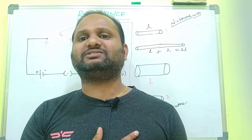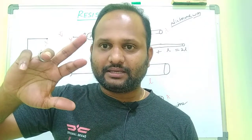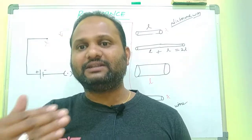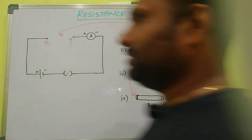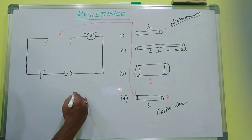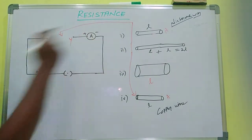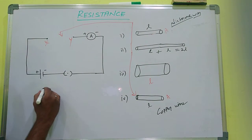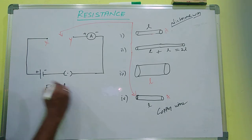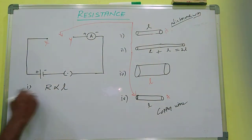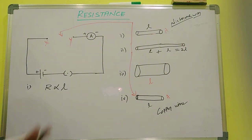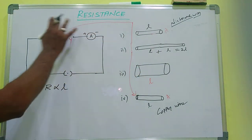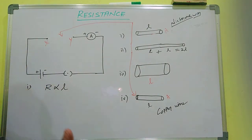When we double the length, the current decreases. That means when the length increases, the resistance of the wire increases, so the amount of current passing through the circuit decreases. From this observation, resistance is directly proportional to length. When the length is increased, resistance increases, so current decreases, because resistance and current are inversely proportional.